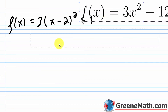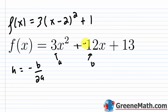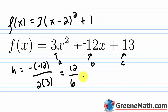Now let's show how much faster the vertex formula is. For 3x squared minus 12x plus 13, we have a equals 3, b equals negative 12, and c equals 13. So h equals negative b over 2a, which is the negative of negative 12 over 2 times 3. The negative of negative 12 is positive 12, over 6, which equals 2. So h equals 2 — and don't forget the negative is already baked into the formula.